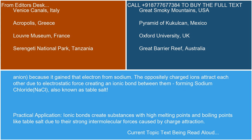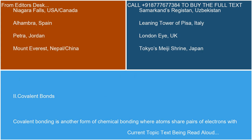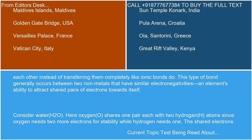Covalent bonding is another form of chemical bonding where atoms share pairs of electrons with each other, instead of transferring them completely like ionic bonds do. This type of bond generally occurs between two non-metals that have similar electronegativities — an element's ability to attract shared pairs of electrons towards itself.